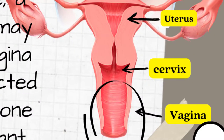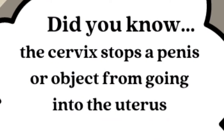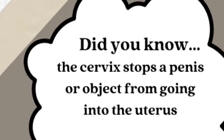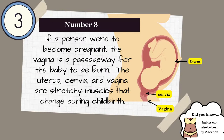Number two: the vagina is for pleasure and/or reproduction. If a person is sexually active, a penis or other object may be inserted into the vagina for pleasure. Unprotected penis and vagina sex is one way to become pregnant. Did you know the cervix stops a penis or object from going into the uterus?